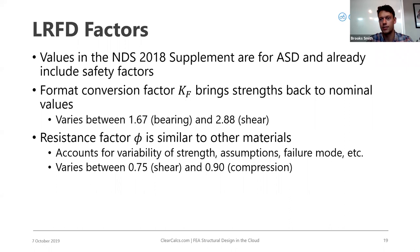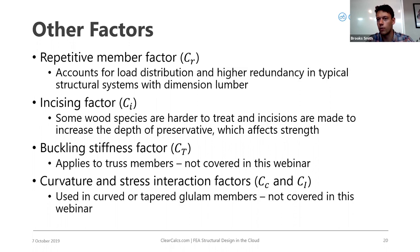For LRFD design, additional factors are needed. The format conversion factor (KF) removes the safety factor embedded in the ASD design values — it can be nearly three times the design strength. A resistance factor (φ) then reduces strength based on statistics, similar to steel or concrete design.